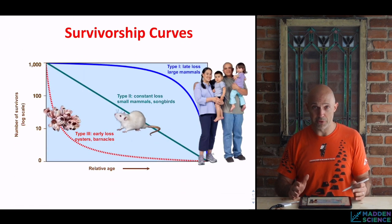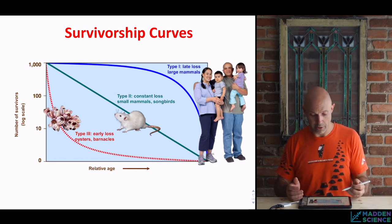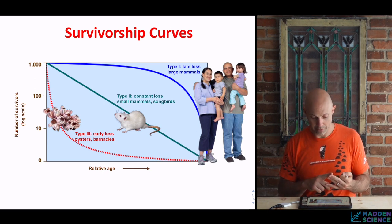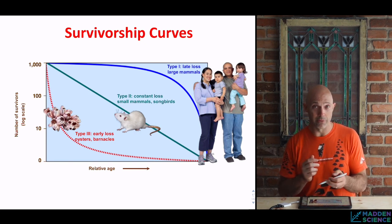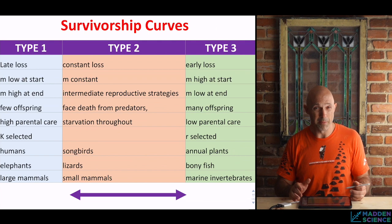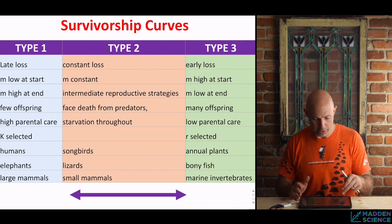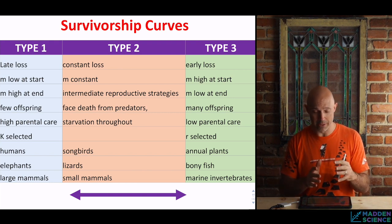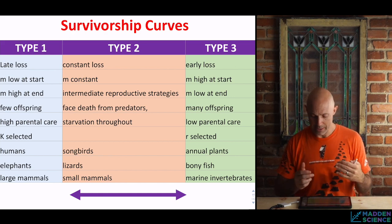There are other shapes for these curves — Type 1, 2, and 3. Humans are Type 1: large mammals with very low early mortality and a steep decline at the end. Type 2 includes squirrels, rabbits, mice, and songbirds — small mammals with a relatively constant change throughout their whole life. Type 3 has early loss then low or late loss. This might be a good place to pause and look at the comparisons — keep in mind not everything fits exactly into these categories; it's definitely a spectrum.